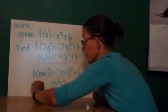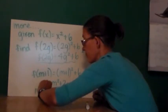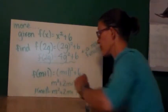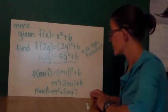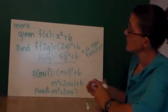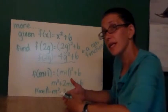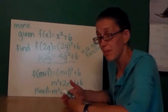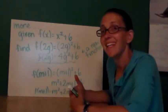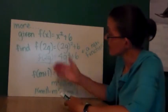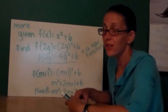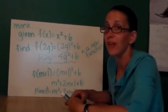f of the quantity m plus 1 is equal to m squared plus 2m plus 7. So again, when I'm substituting numbers in place of the input for a function, I get a numeric value back. When I substitute variables in, in general, I'll get a new function.